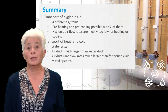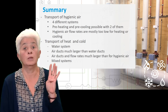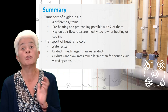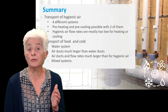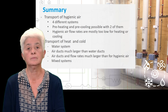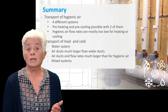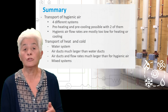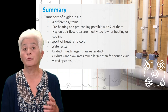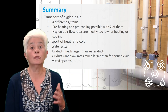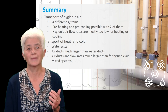Summarizing: you must make a difference between the transport of hygienic air and the transport of heat and cold. For hygienic air, four systems can be used, and only two — mechanical supply and mechanical supply with exhaust — allow for preheating or pre-cooling. In most cases, flow rates of hygienic air are not enough to fully heat or cool a building. Heating and cooling can be done by a water system or by an air system with large quantities of warm or cold air; the ducts with an air system are much larger than with a water system. Very often a mixed system is used, taking advantage of both. Thank you for listening, goodbye!